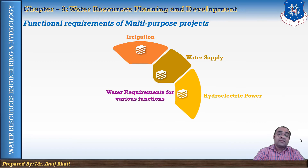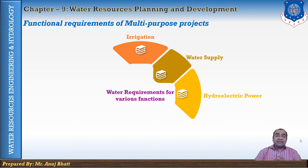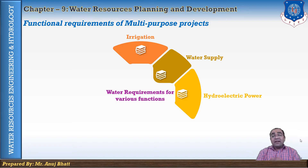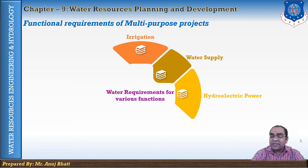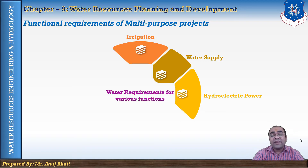The third functional requirement is hydroelectric power. Power demand usually varies considerably from season to season depending on the area served. Most power plants are part of an interconnected system, and therefore considerable flexibility can be exercised in coordinating power needs with other uses of water. This makes power more compatible with other uses. Water released from the reservoir for irrigation purposes can also be passed through turbines to generate electricity.